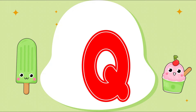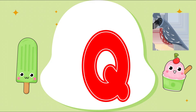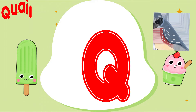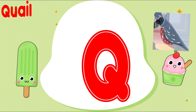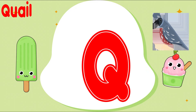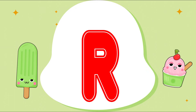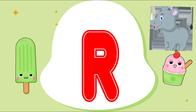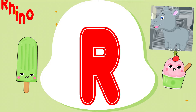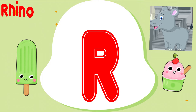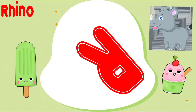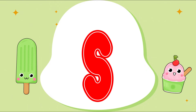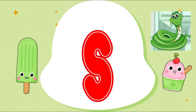Q is for Quail. Q, Q, Quail. Q, Quail. Q, Quail. R is for Rhino. R, R, Rhino. R, R, Rhino. R, Rhino.